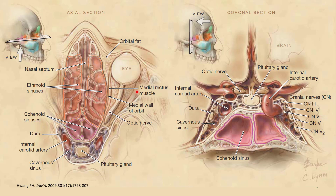The sites of these complications include the orbits — the eyes — and also the nervous system. This makes sense because these structures are in proximity to the sinuses. If the infection becomes complicated, the organism can actually penetrate the eye and also the brain.